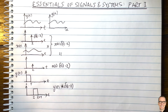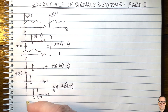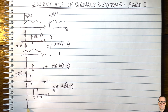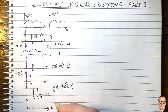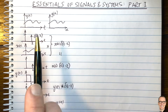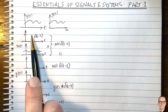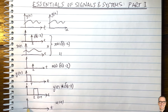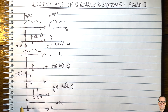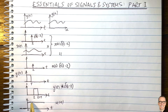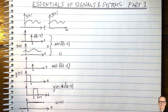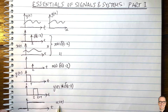Another important function is the step function. Wherever you see u of t, it is the step function: it equals zero for all negative time and equals one for all positive time. It's important to remember that the step function does exist for negative time — it's just that it equals zero there. That's a very important property not to overlook.